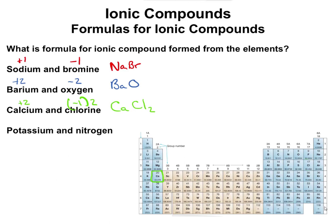The last one is potassium and nitrogen. Potassium's symbol is K, and it's going to be a plus one — it has to lose one electron. Nitrogen is three away from a noble gas configuration, so it would have to gain one, two, three electrons to be like a noble gas, making it a minus three. In this case, we're going to need three potassiums to balance it out, so the compound is K₃N.